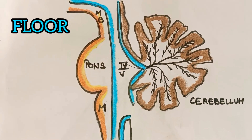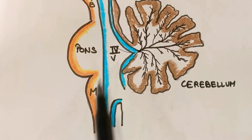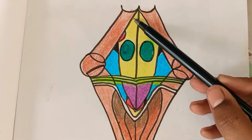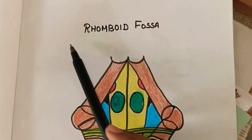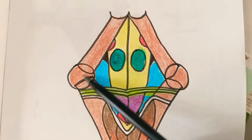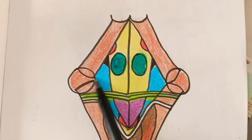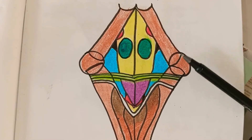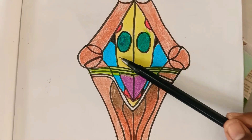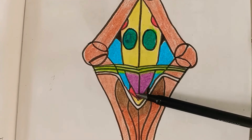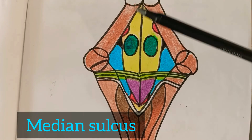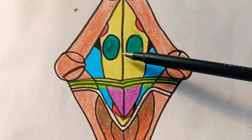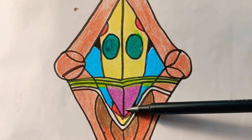The floor of the fourth ventricle is the posterior surface of the pons and upper part of the medulla. It is rhomboid in shape and is called the rhomboid fossa. The floor is divided symmetrically into right and left halves by the median sulcus, which extends from the cerebral aqueduct of Sylvius above down to the central canal. From the median sulcus, the arcuate nucleus gives rise to white glistening fibers.